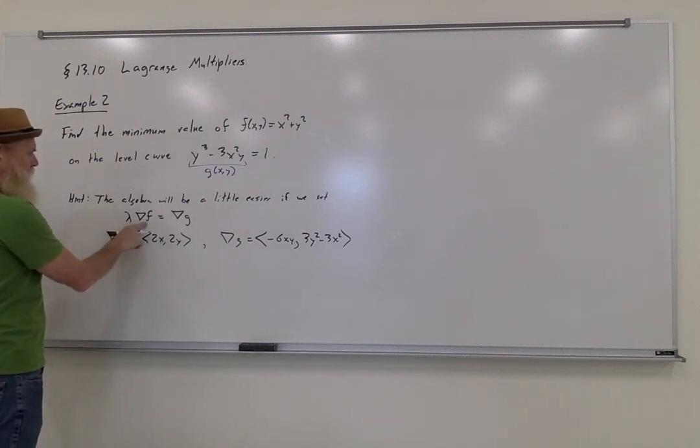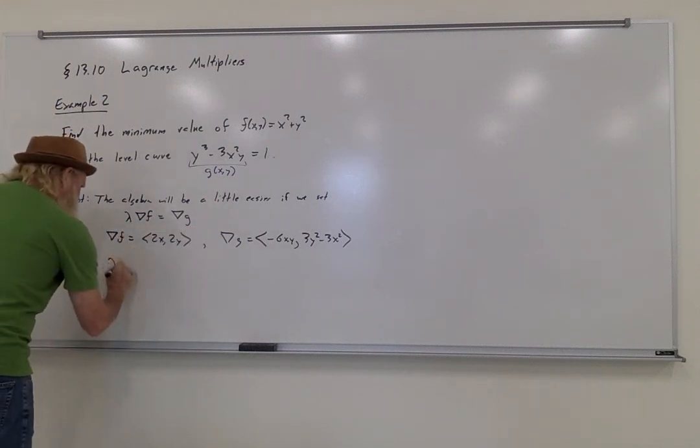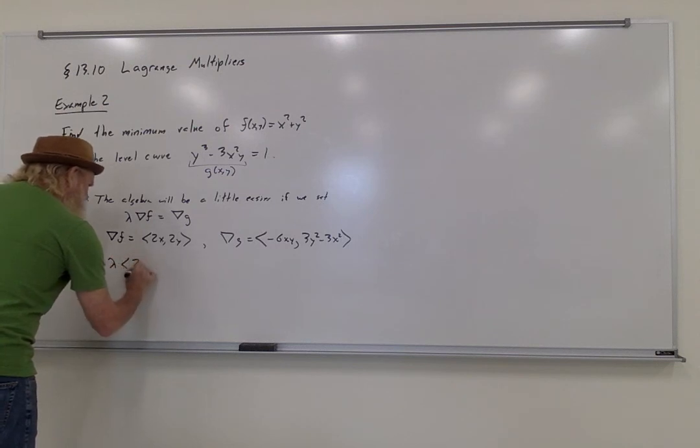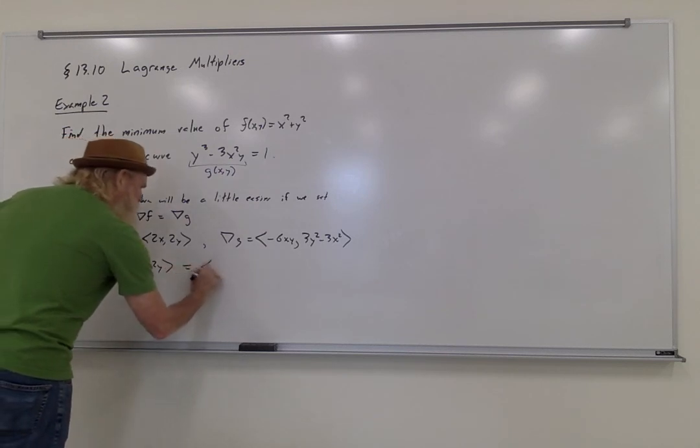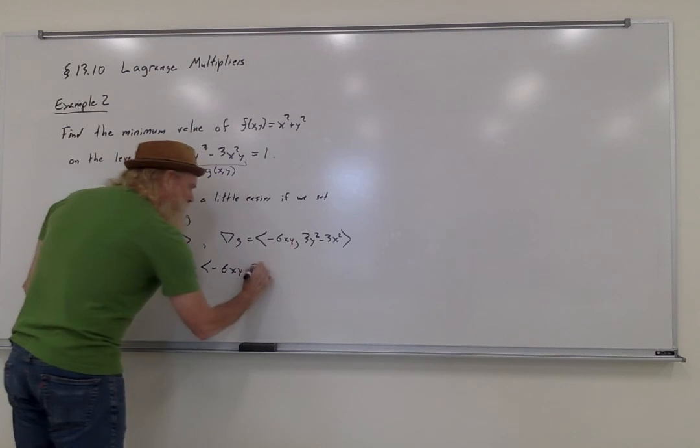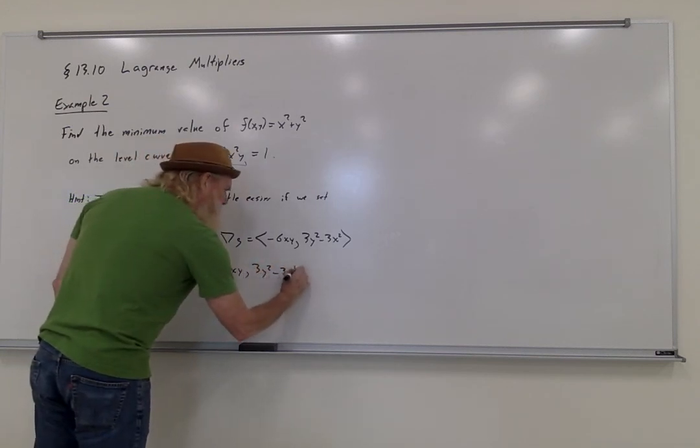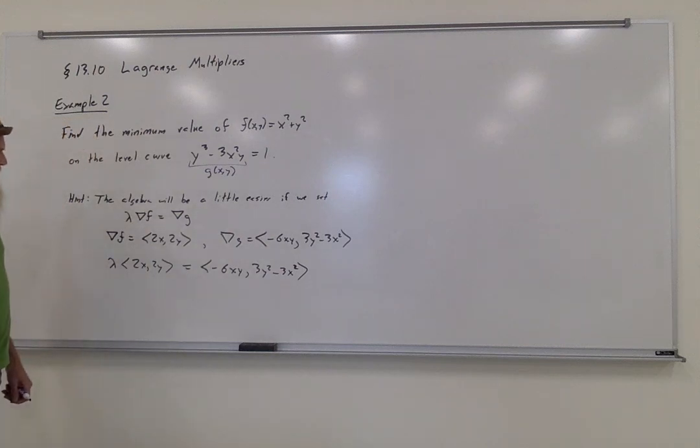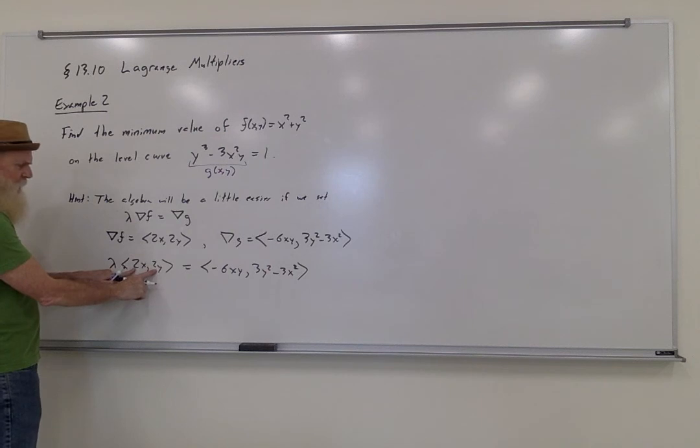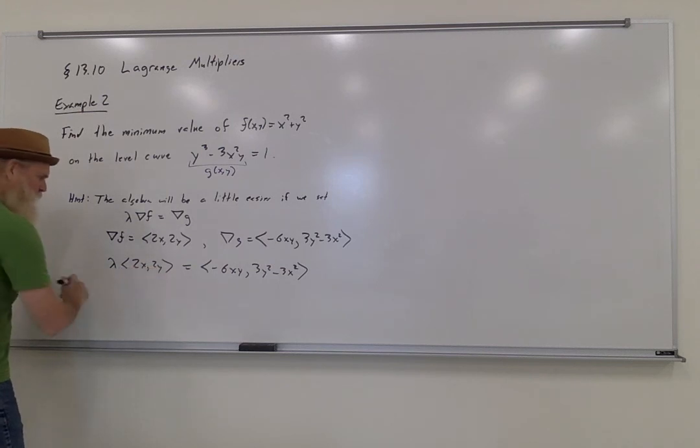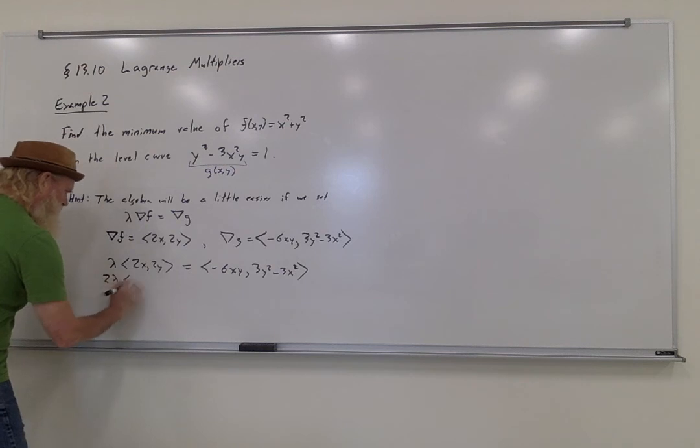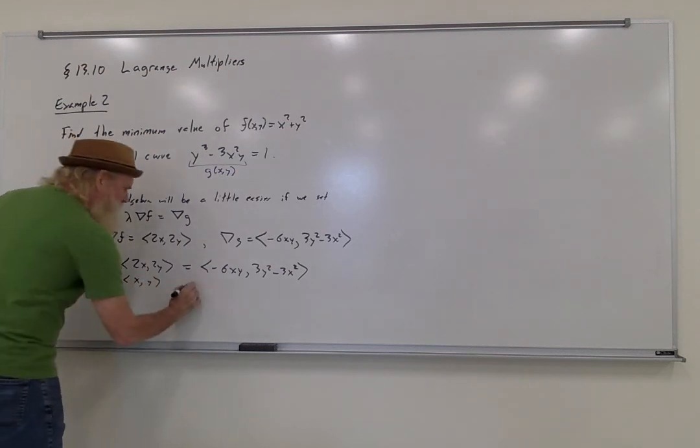So if I set lambda gradient f equal to gradient g, to begin with I get something that looks like this. Now something that's really clear to me is that I have some common factors that I can take out of each of these two vectors. I can factor a 2 out of the first vector, so this is 2 lambda times x comma y.